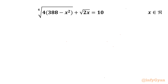Welcome back to Infigyan, my dear friends. In today's video we are going to take up another challenging question from radical equations. It is the 4th root of 4 times (388 minus x squared) plus the square root of 2x, equal to 10. We have to find only real solutions.